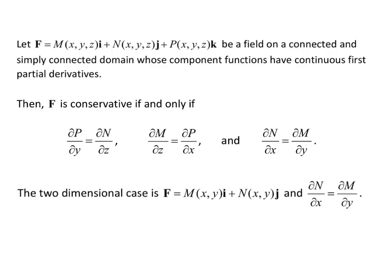The two dimensional case is capital F equals m of x, y, i plus n of x, y, j, and it simplifies the partial derivatives to partial n partial x equals partial m partial y. So it's just that i and j component criteria if you have a two dimensional vector field.